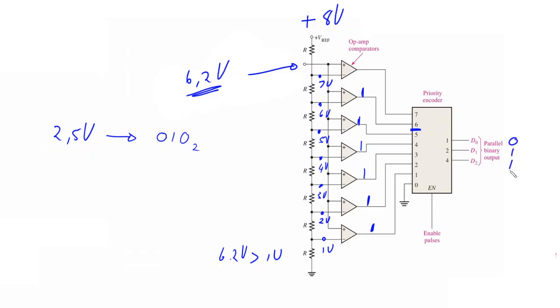0, 1, 1. 6.2 volts has a binary equivalent of 110.